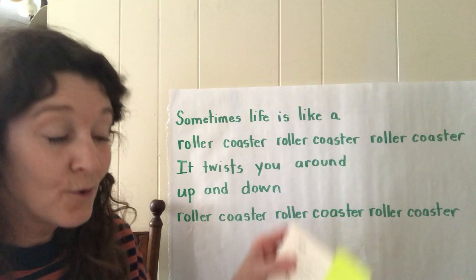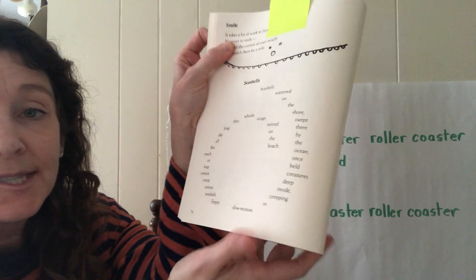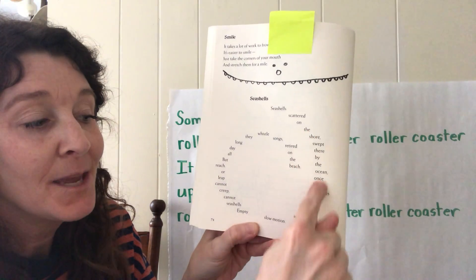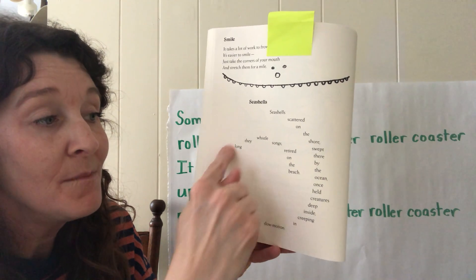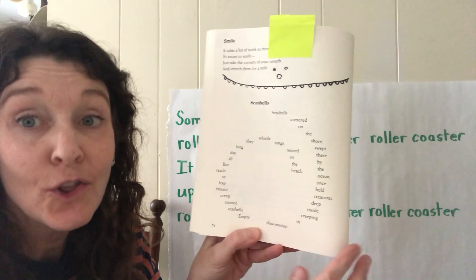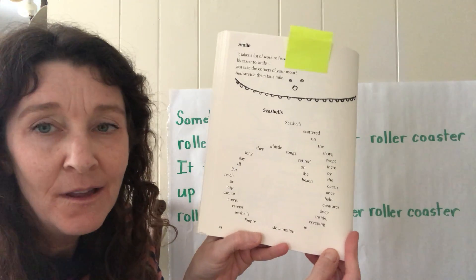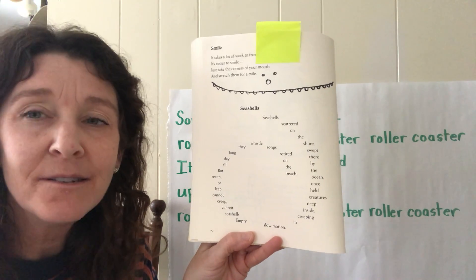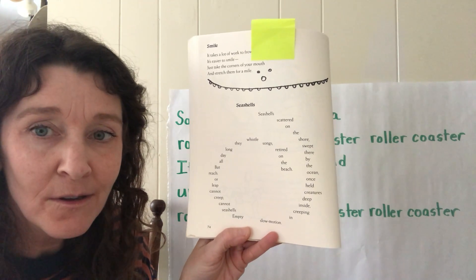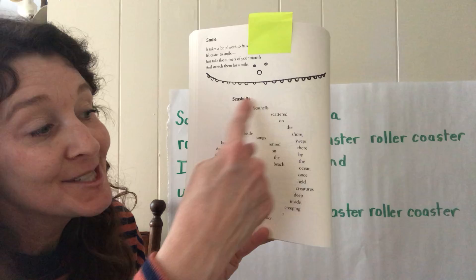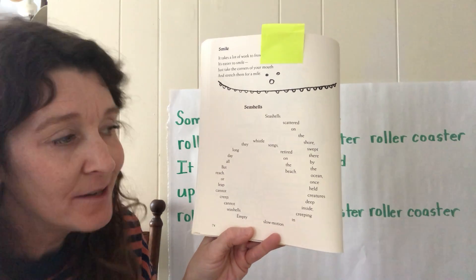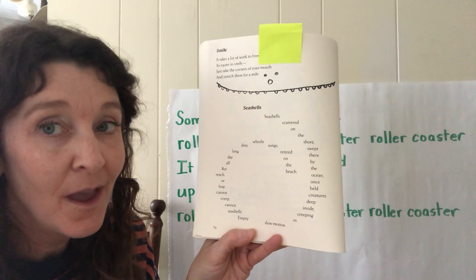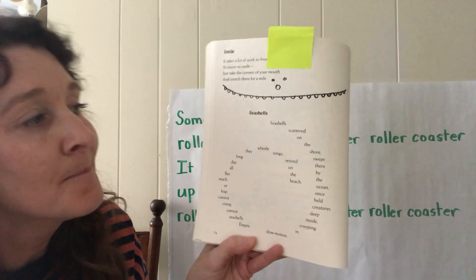Douglas Florian wrote this poem, 'Seashells.' As you can see, he made the poem a shape poem — it looks like a seashell. Let's read it, and as we read it, think: how does it look, how does it sound as I read it, and do the words and the shape help the meaning? Let's check.